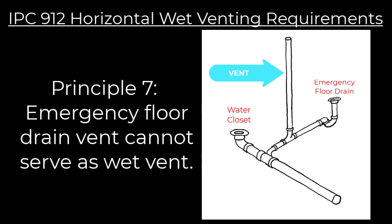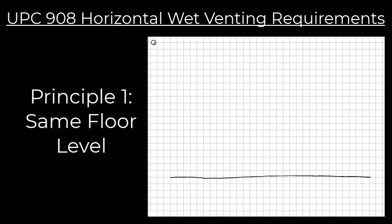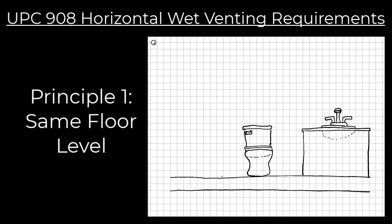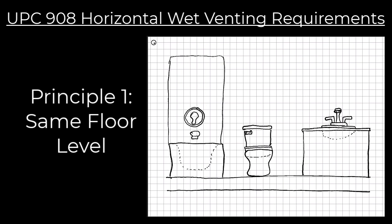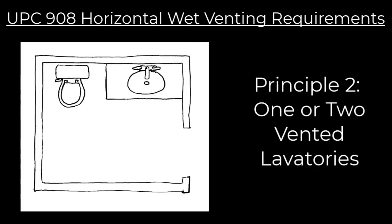A vent for an emergency floor drain that does not have consistent flow could become blocked over time as drain scum or whatever else builds up inside. Now let's go over to the Uniform Plumbing Code and look at what they have for wet venting — this is in section 908. Principle one: all wet-vented fixtures must be on the same floor level.